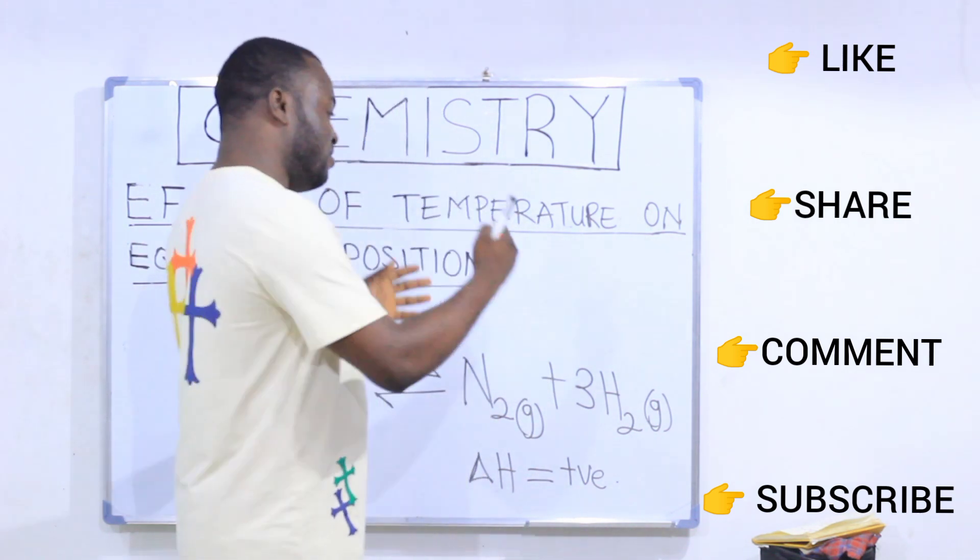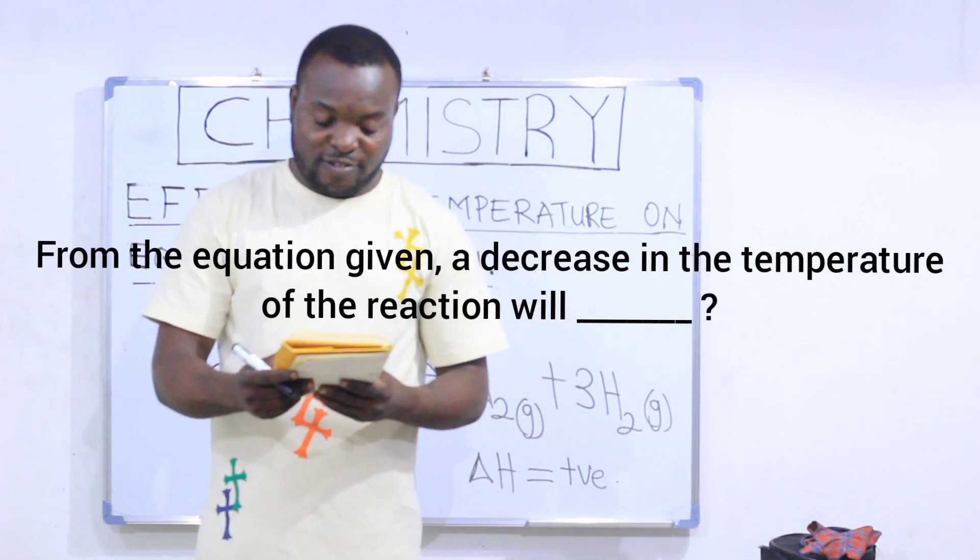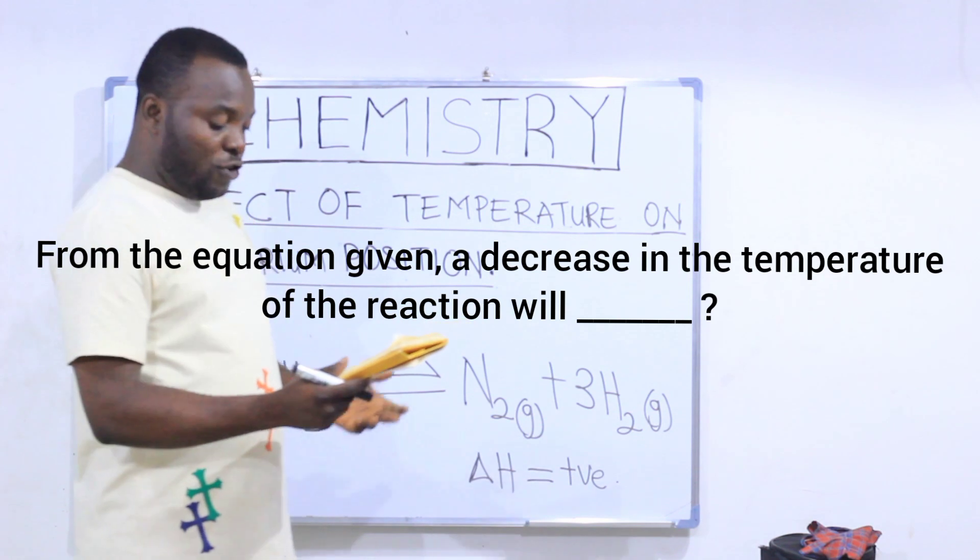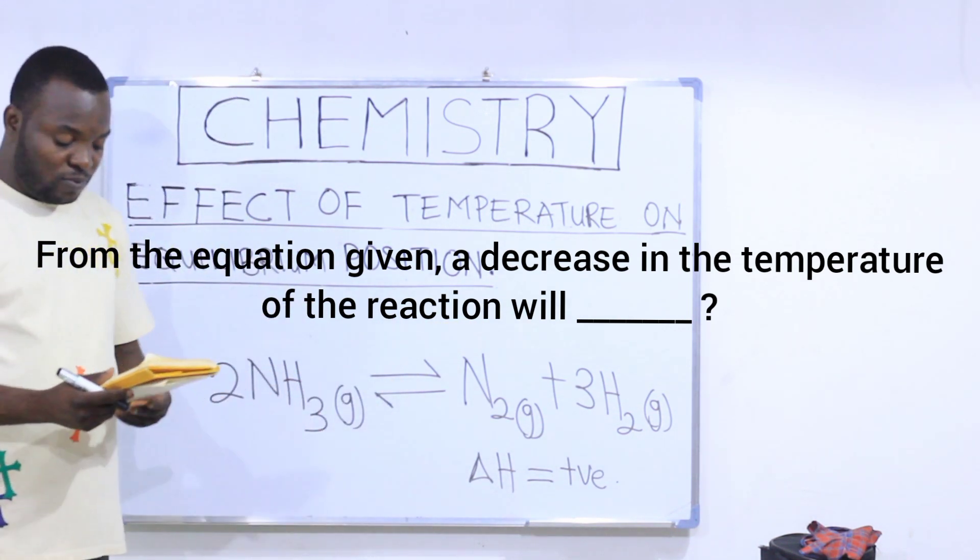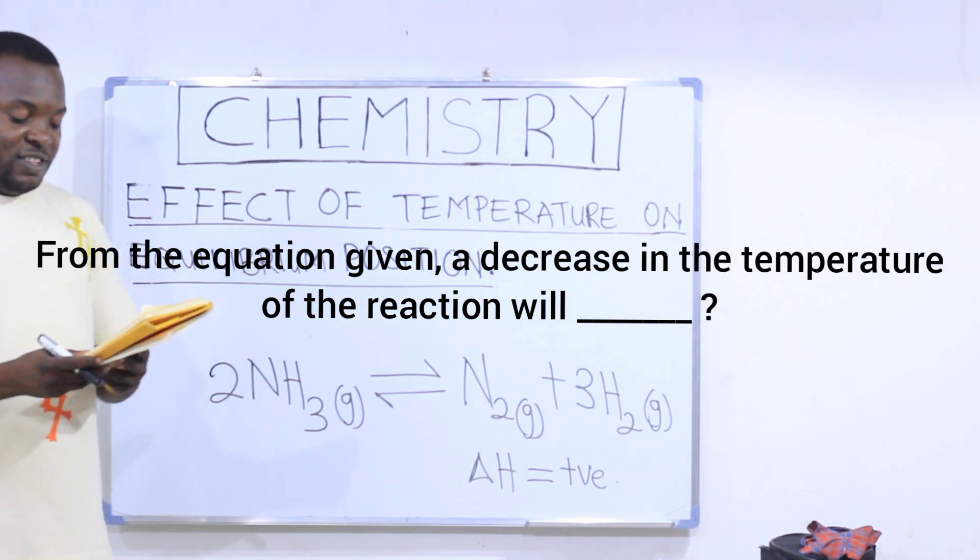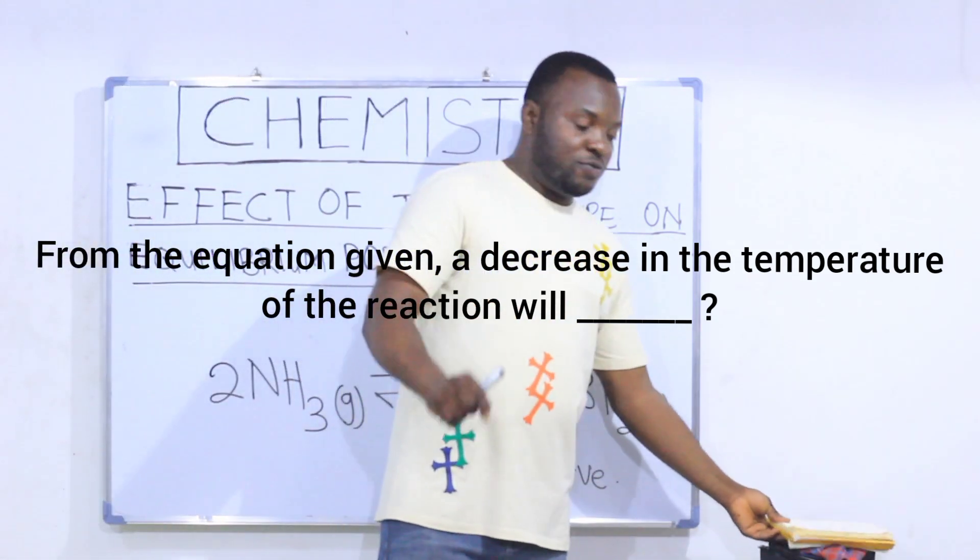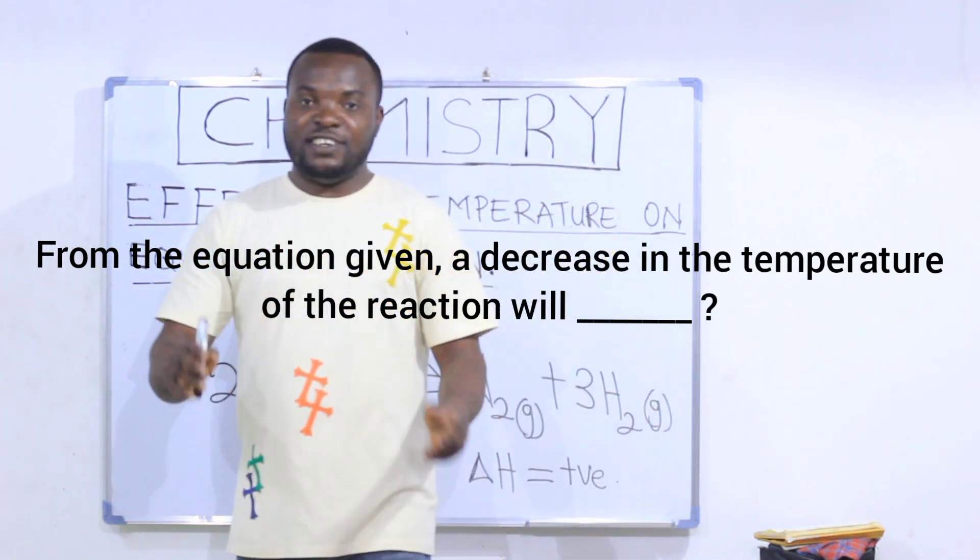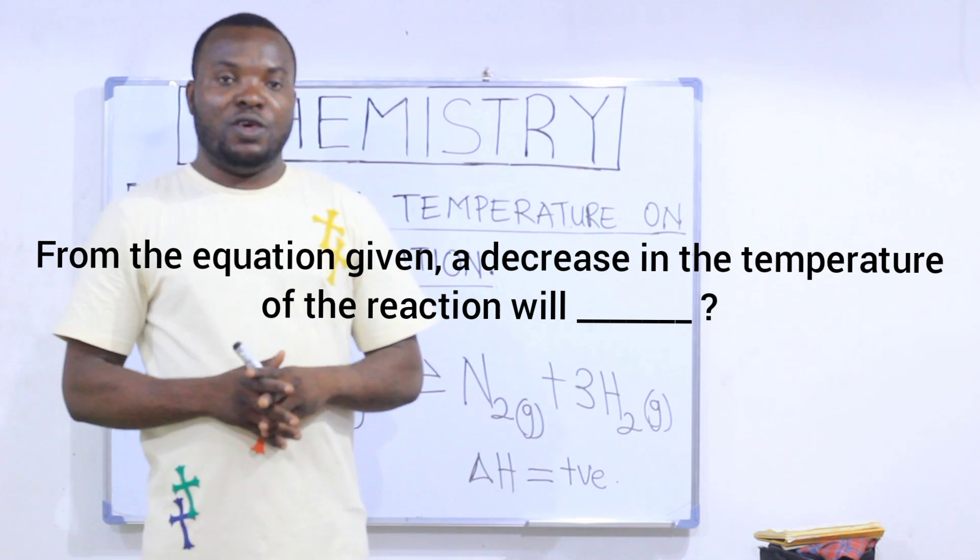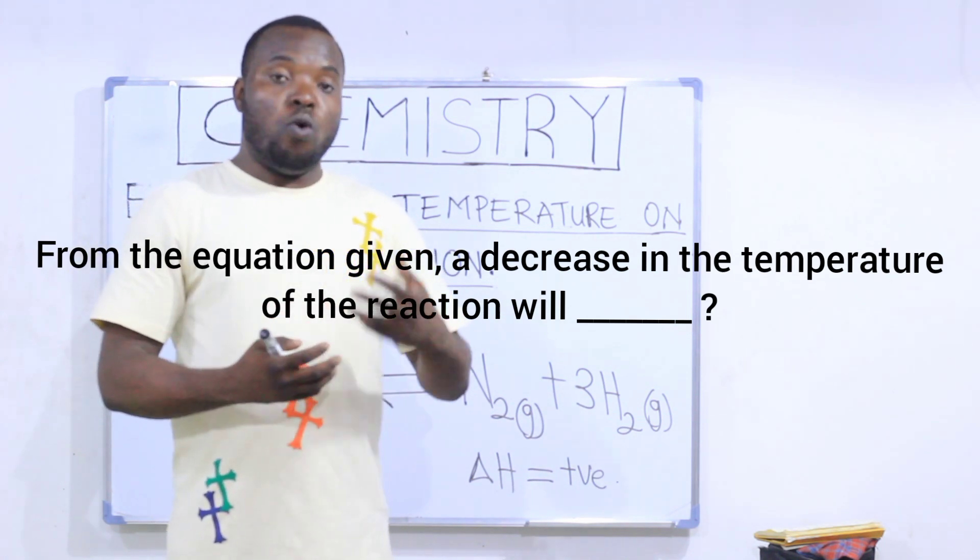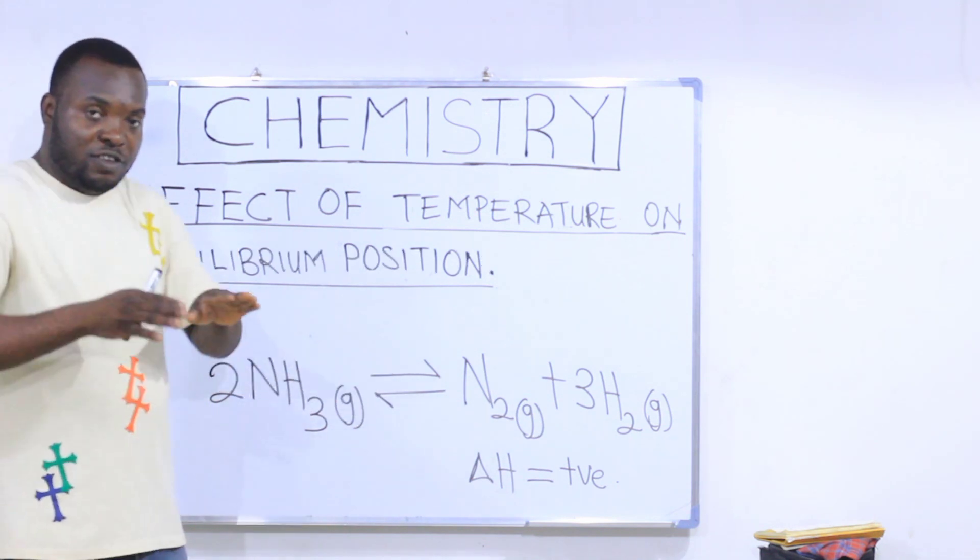Now let's quickly take a look at this question and see how to solve it. The question says, from the equation given, a decrease in the temperature of the reaction will dash. We have been asked to tell what will happen when the temperature of this reaction in equilibrium state is decreased.